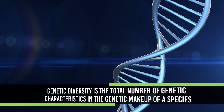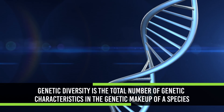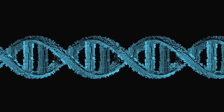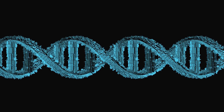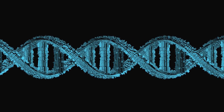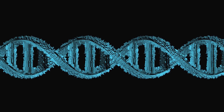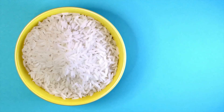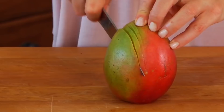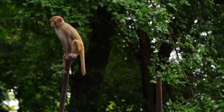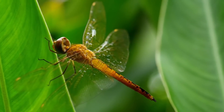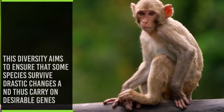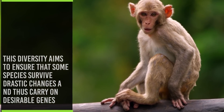Genetic diversity is the total number of genetic characteristics in the genetic makeup of a species. A single species might show high diversity at the genetic level. For example, human beings have different genes such as Chinese, Indian, American, African, etc. India has more than 50,000 genetically different strains of rice and 1,000 varieties of mango. Genetic diversity allows species to adapt to a changing environment, ensuring that some species survive drastic changes and carry on desirable genes.